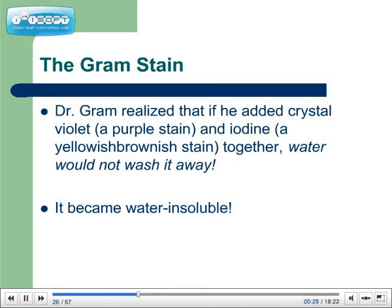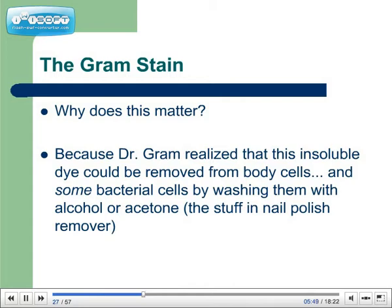Dr. Gram realized that if he added crystal violet, which is purple, and iodine, which is kind of yellow-brown, if he added them together, water would not wash it away — it became water-insoluble. It created this precipitate that kind of got stuck there. Dr. Gram realized that this insoluble dye could be removed from body cells and some bacterial cells by washing them with alcohol or acetone. Acetone is the stuff in nail polish remover. We put crystal violet and iodine on a specimen. It sinks into all the cells — into your body cells and also into the bacterial cells.